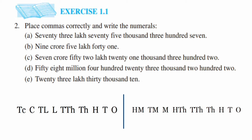Hey everyone, here is question 2 from Exercise 1.1, from Class X, Chapter 1, which is 'Knowing Our Numbers.' This is a very simple question you might already know, but I'm going to explain how to do this. If you know a better way, you can use that. For those who don't know how to solve this, I'll explain. The one thing you should know is place values. The question says: place commas correctly and write the numerals.